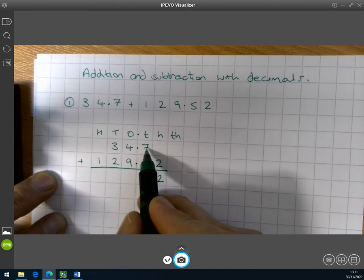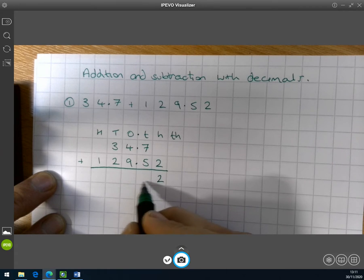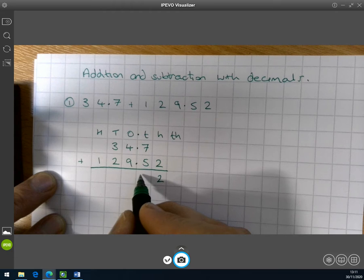In this column we've got 7 tenths plus 5 tenths. Well that makes 12. We're not going to write the number 12 here. So just like we're adding whole numbers, we're going to exchange 10 of those 12 for one up here. So we're going to write our 12 like that.